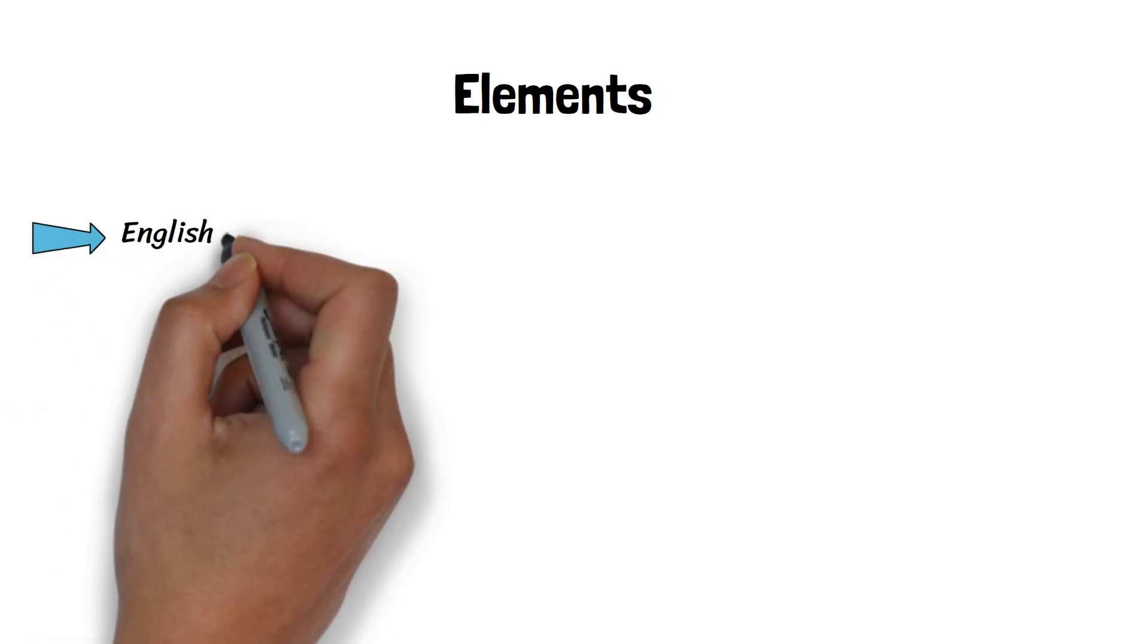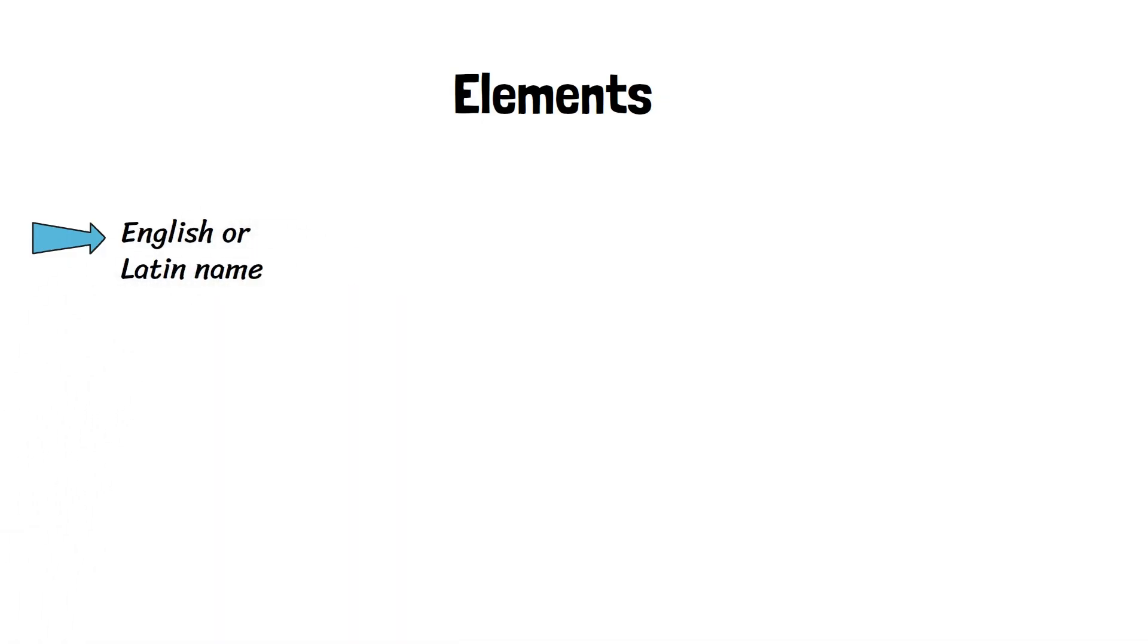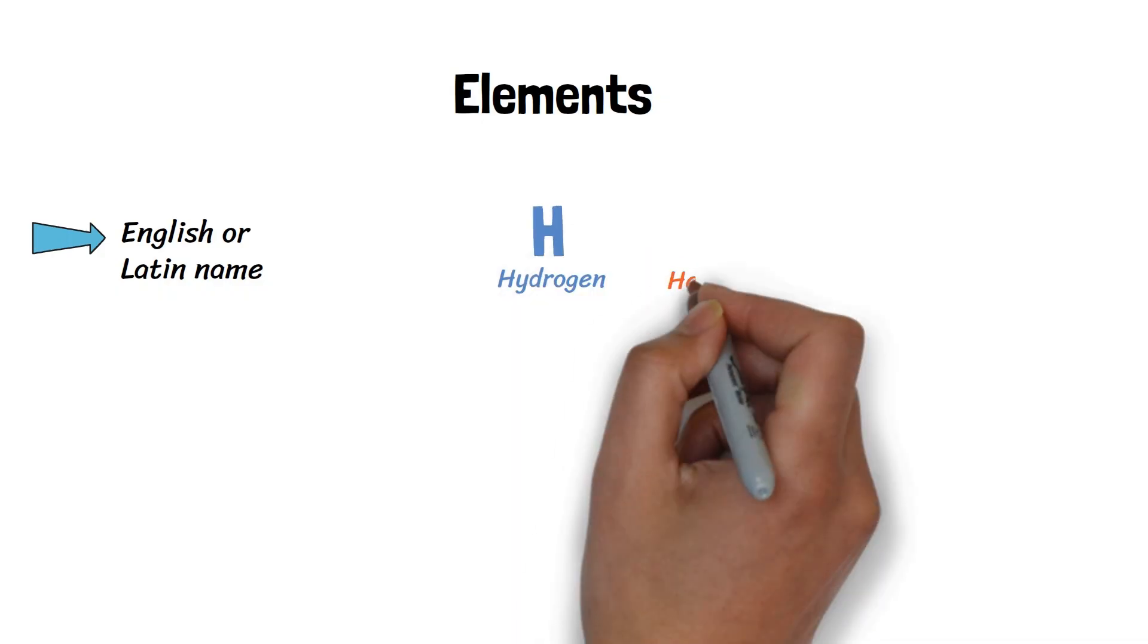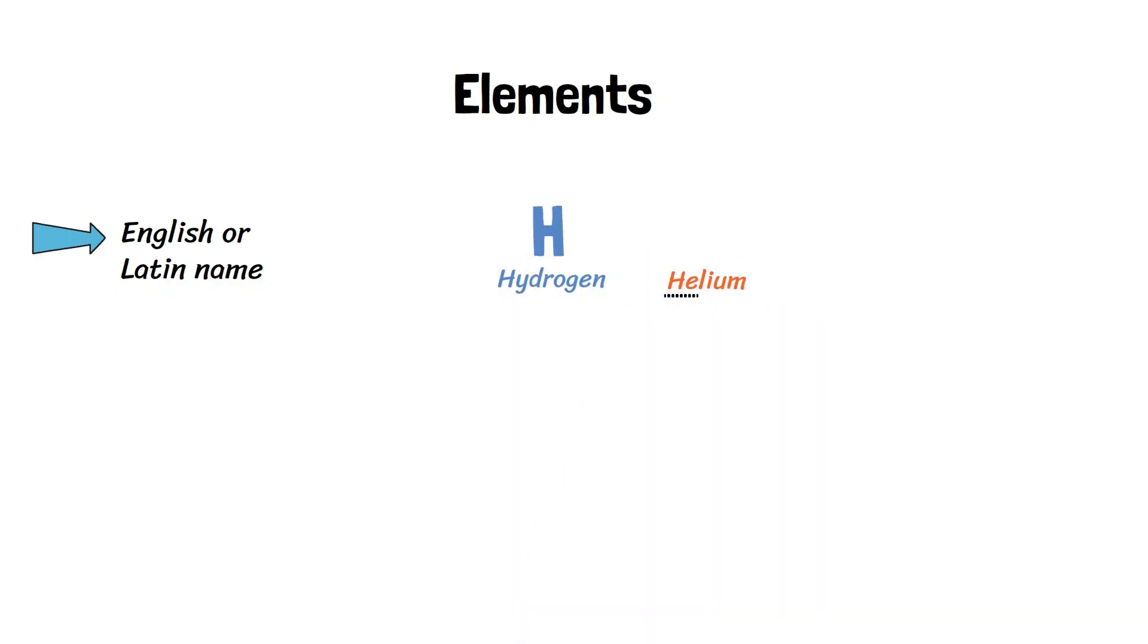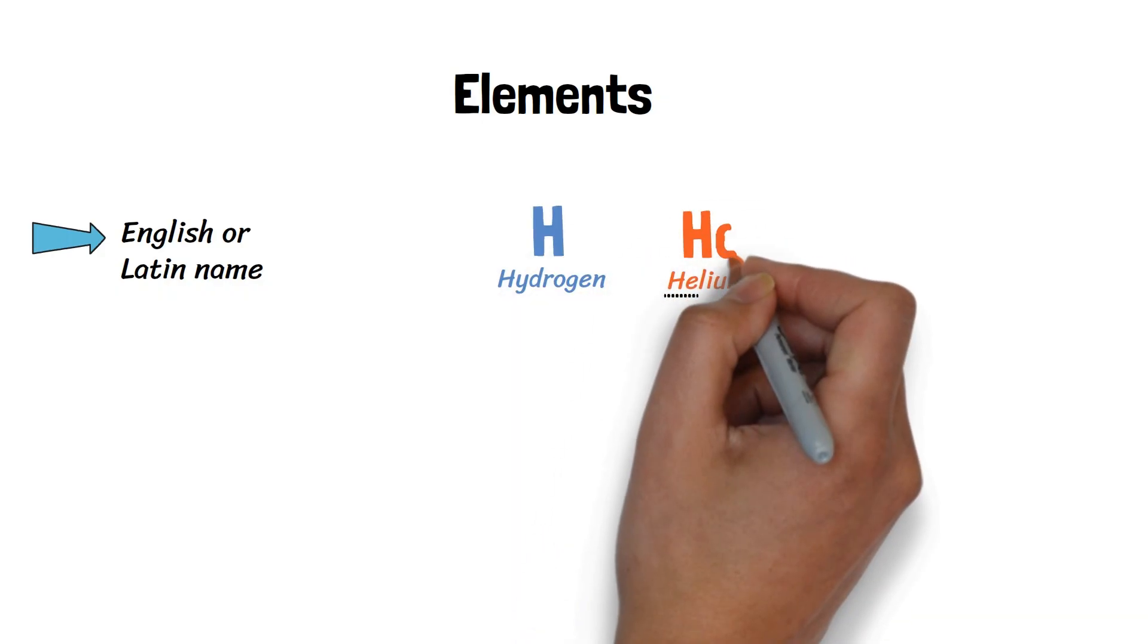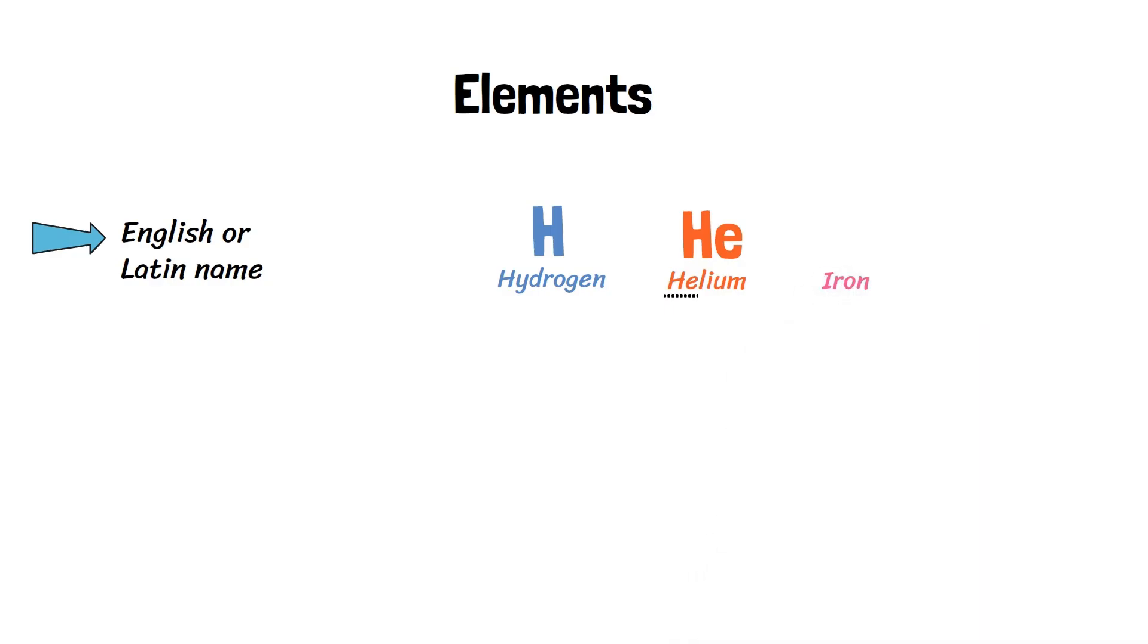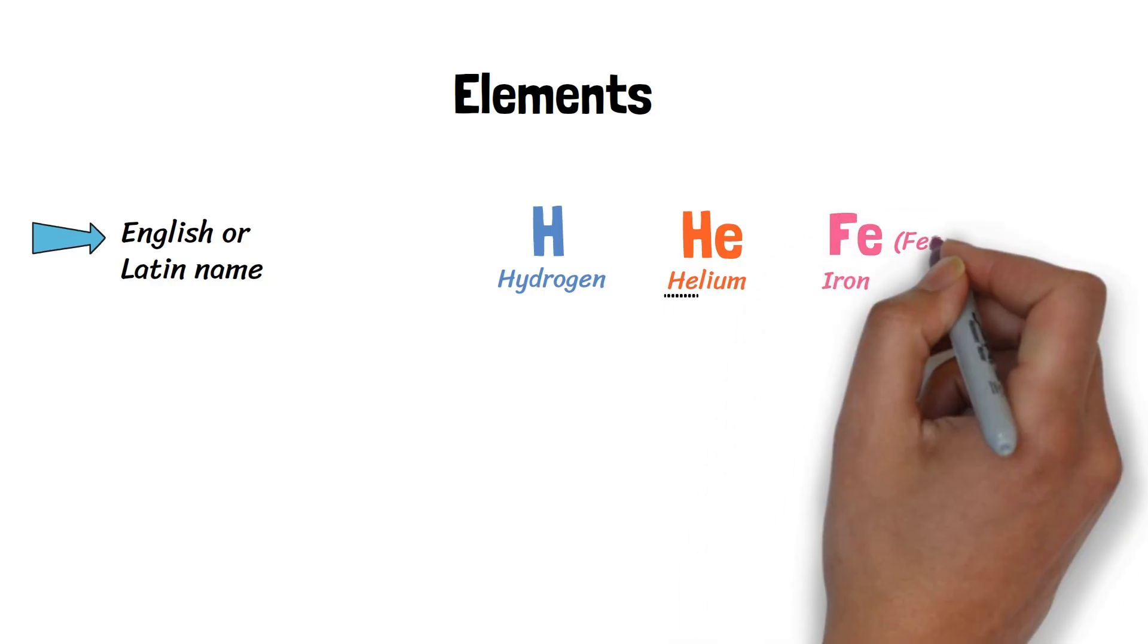Each element is represented by a one- or two-letter symbol, usually derived from its English or Latin name. For example, hydrogen is represented by H. Helium is represented by the first two letters of its English name, He. Iron is represented by Fe from its Latin name, ferrum.